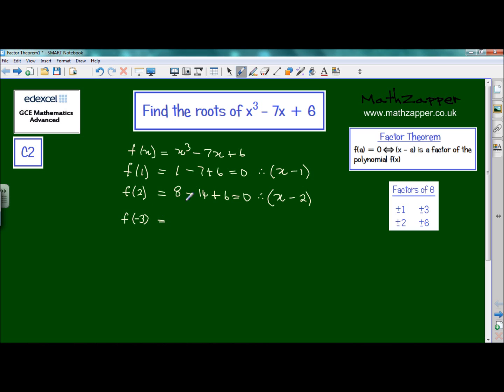Now, -3 all cubed is -27, minus 7 × -3 is +21, and then the final constant adds 6. And if you look, this equals 0 again.